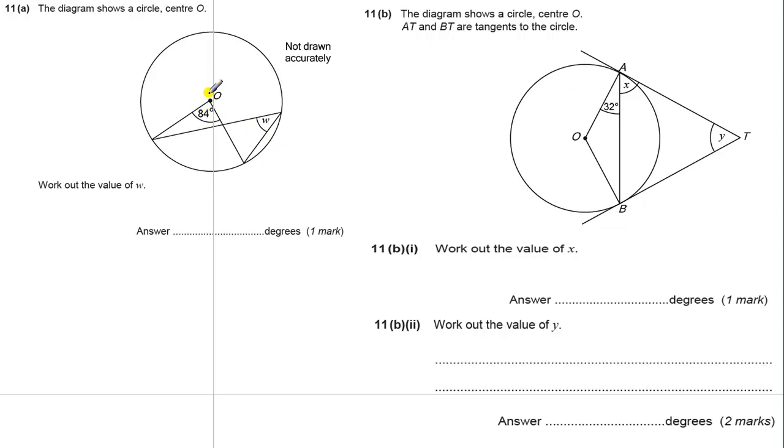Now this first part, part A, it's a little bit sneaky. It's trying to maybe confuse you and think that this is to do with what I call the bowtie rule, where you have a circle and you have a chord, and any angle subtended at the circumference or made at the circumference, these angles will be the same. But this is not the case here because this is not the circumference, this is the center.